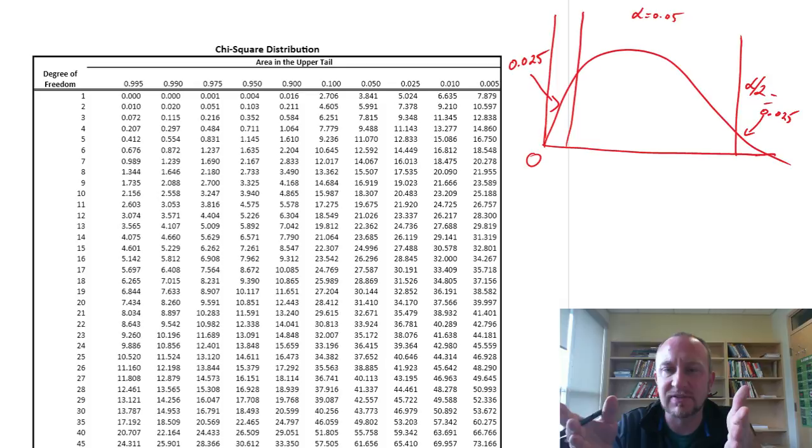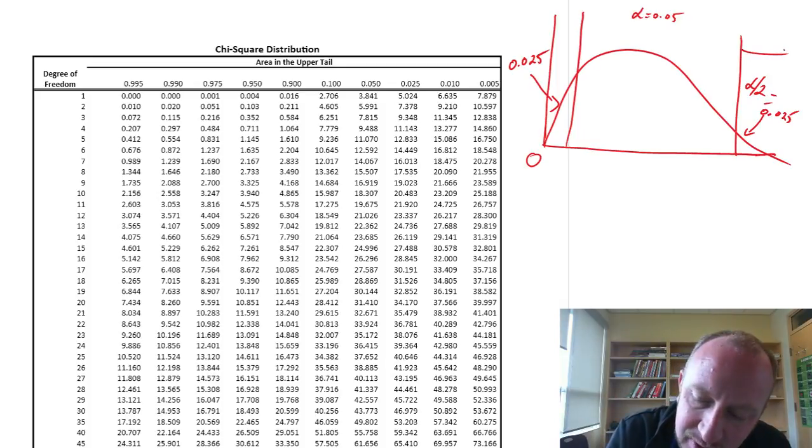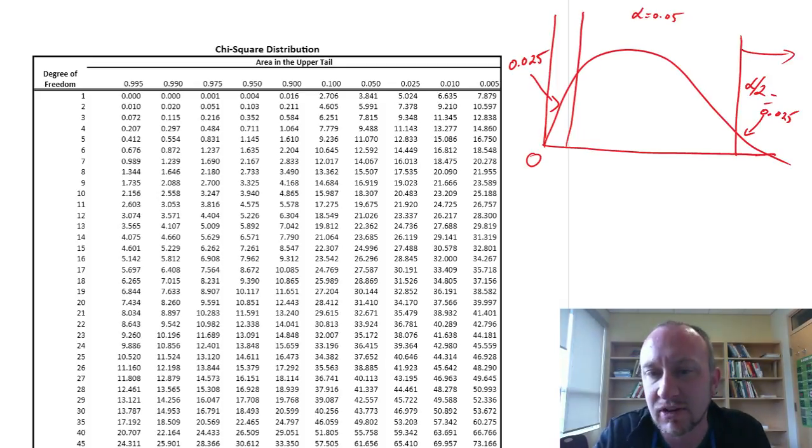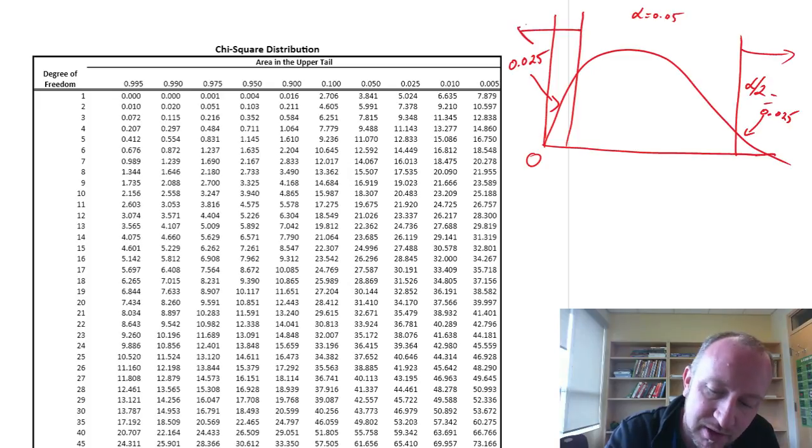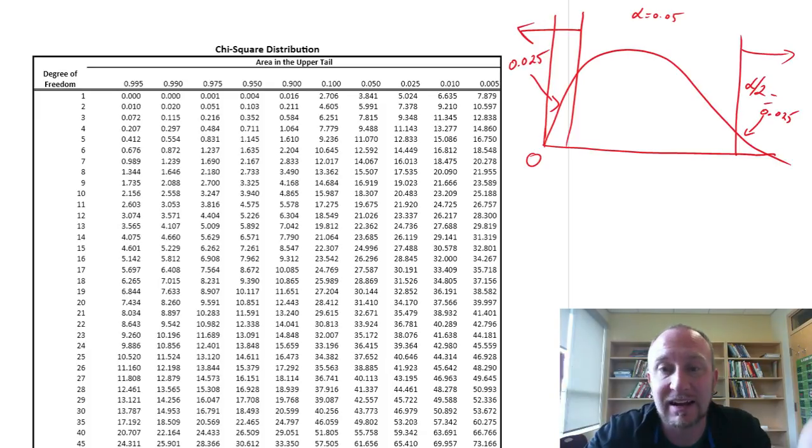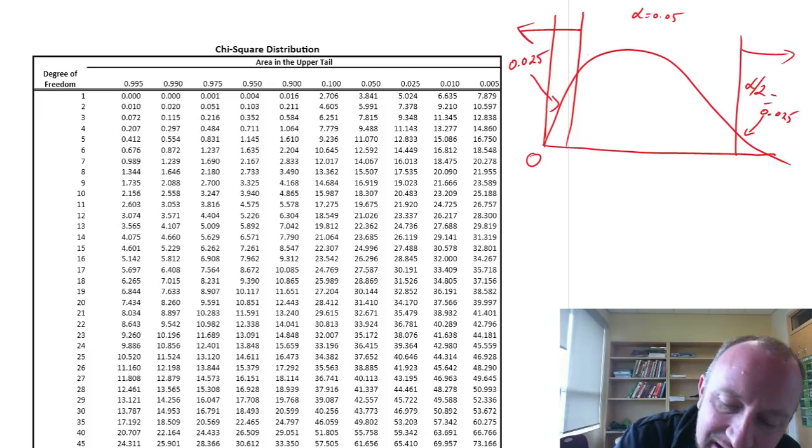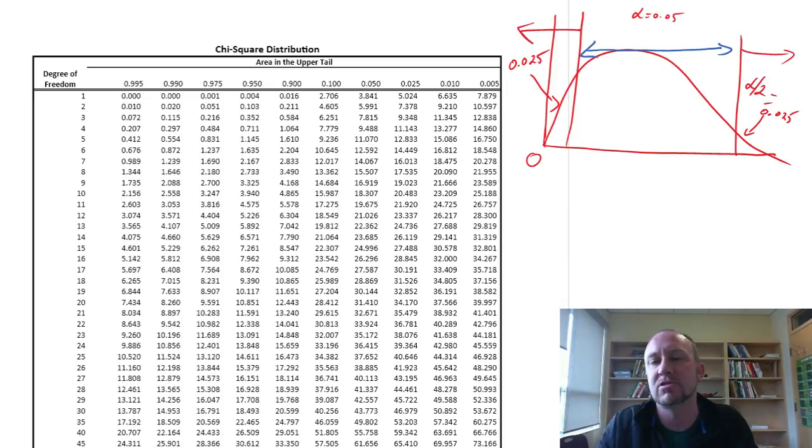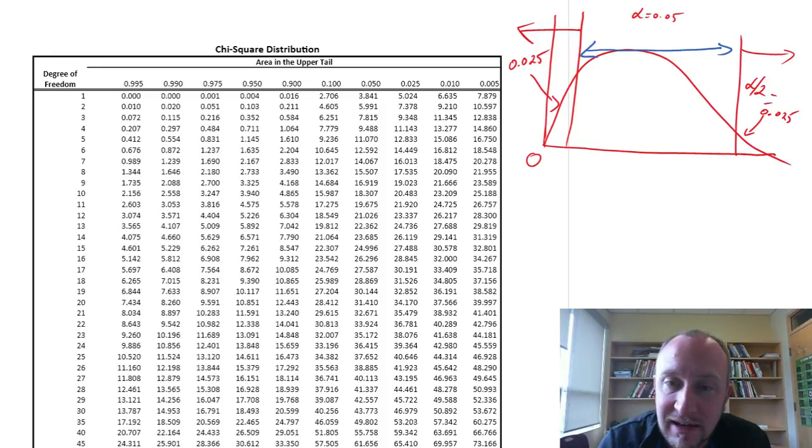This is the same as for the t and the z distribution. If I identify these two critical values - beyond this one, 2.5% of the observations, beyond this one, 2.5% of the observations - which means that if I draw a number at chance, at random, there's a 95% chance that they will lie between those two critical values. This is all the same as what we worked with, with the t and the z tables.